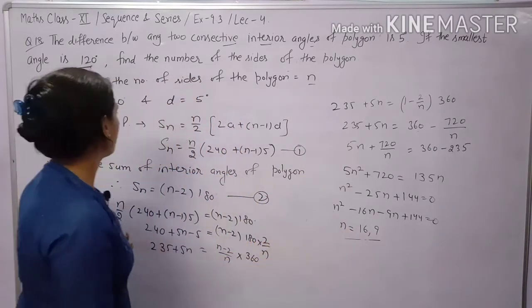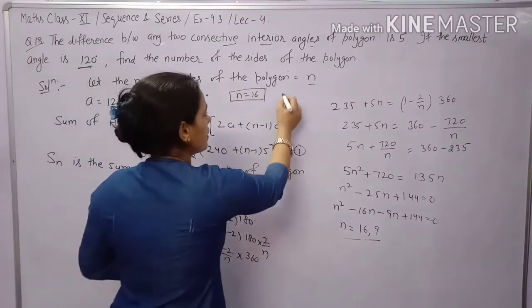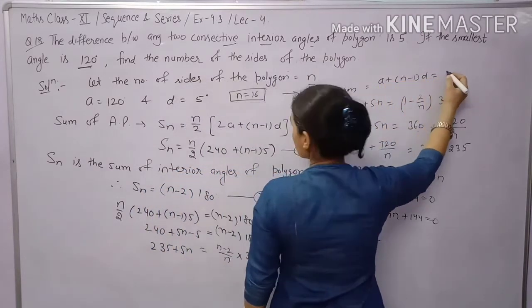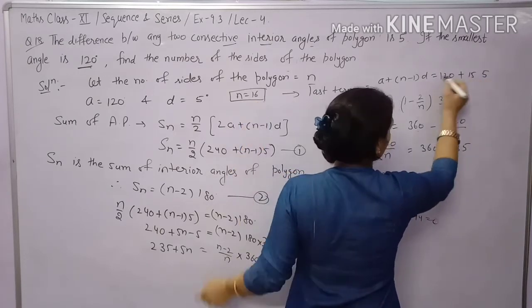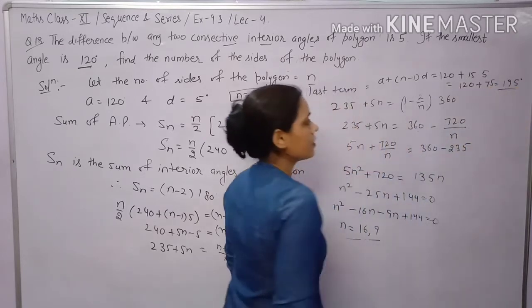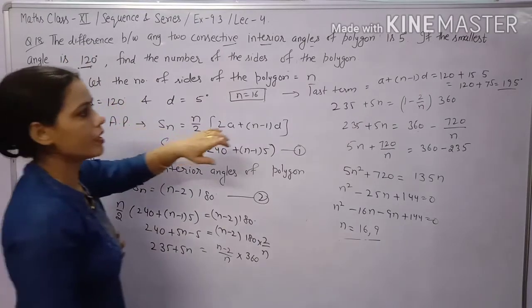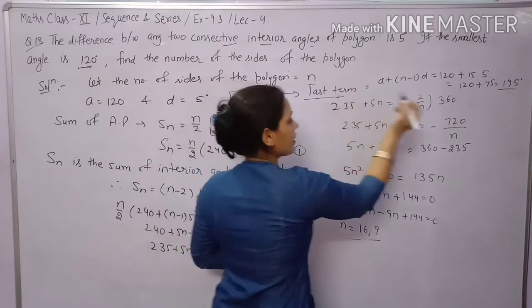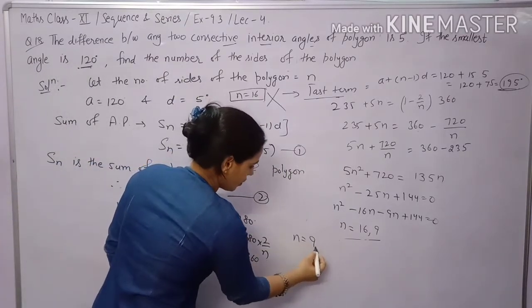For N=16: the last term (largest angle) = 120 + 15×5 = 195 degrees. Since an interior angle cannot exceed 180 degrees, N=16 is rejected. Therefore N = 9 is the valid answer — the polygon has 9 sides.